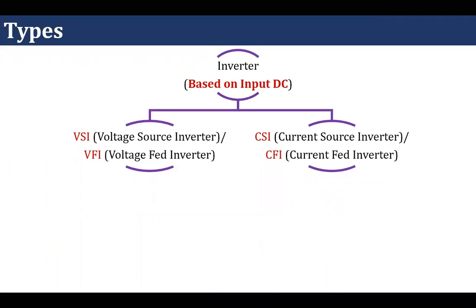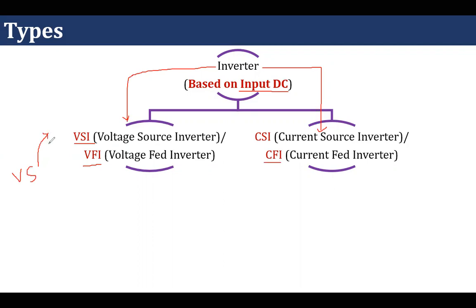Now we will talk about types of inverter. Whenever we divide anything into different types, we must have a reference. If I am considering the input DC as the reference, then an inverter can be categorized into two types: one is known as voltage source inverter, another is known as current source inverter. The voltage source inverter is also known as voltage feed inverter, and the current source inverter is also known as current feed inverter. A voltage source is one where voltage is constant — the voltage amount is not changing due to load; current depends on the load, but voltage is unchanged. A single-phase AC supply available at our houses is an example of a voltage source, though it is AC in nature.